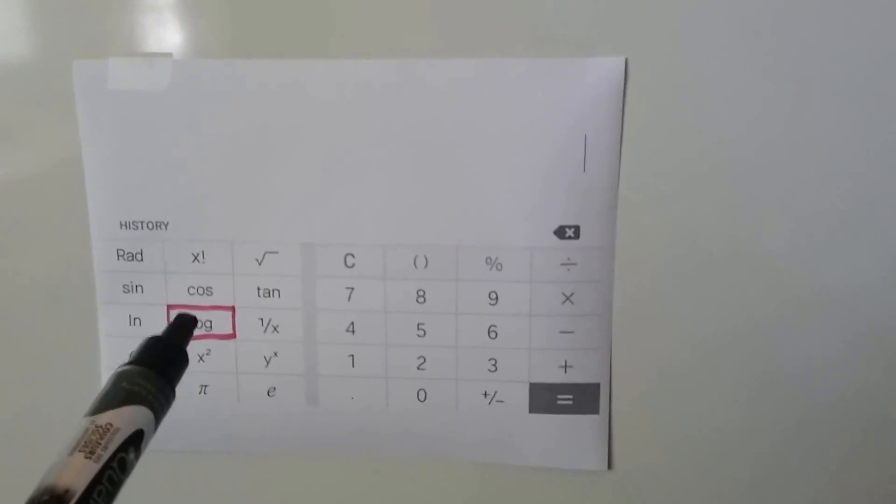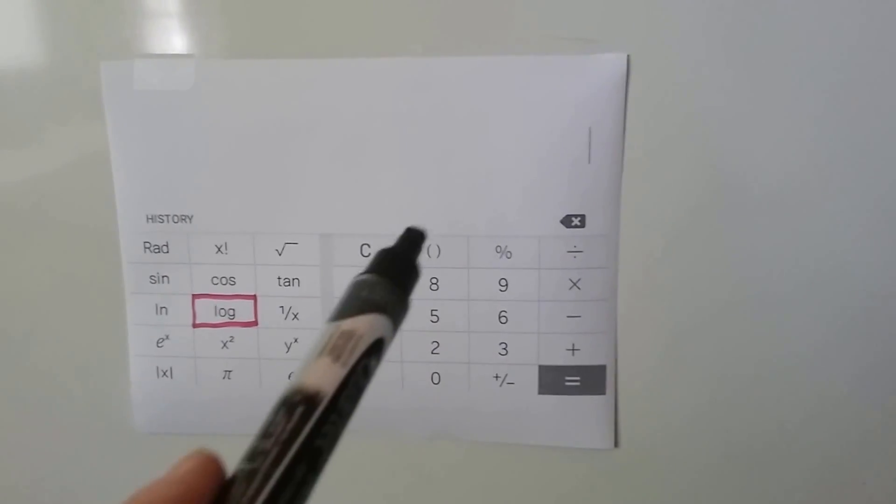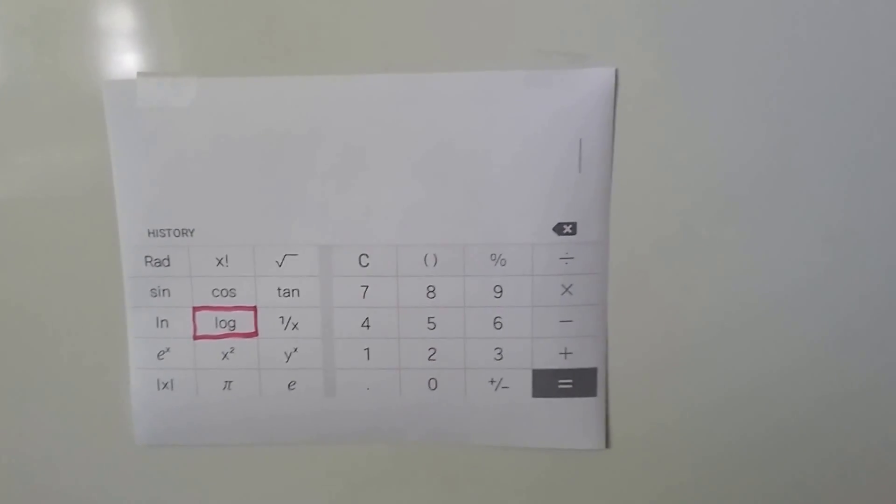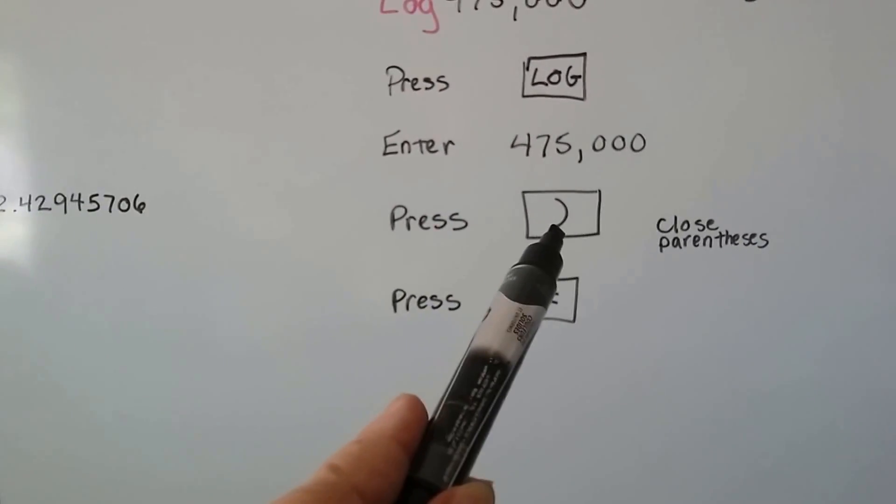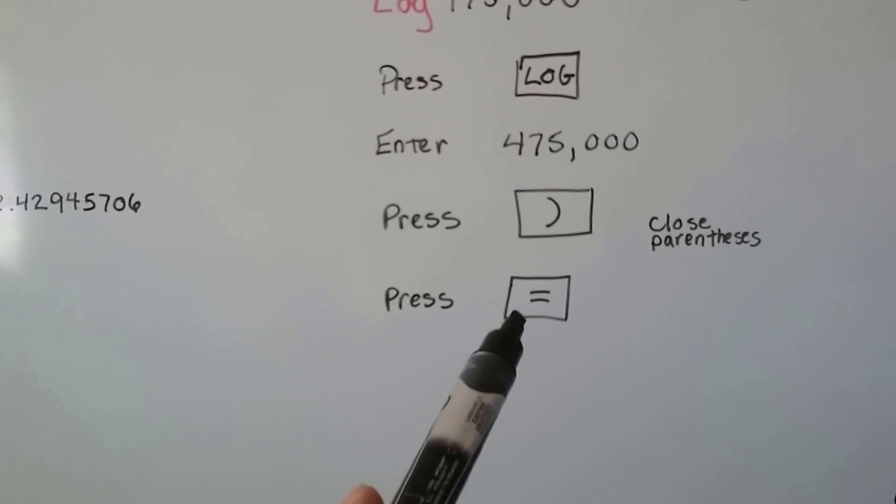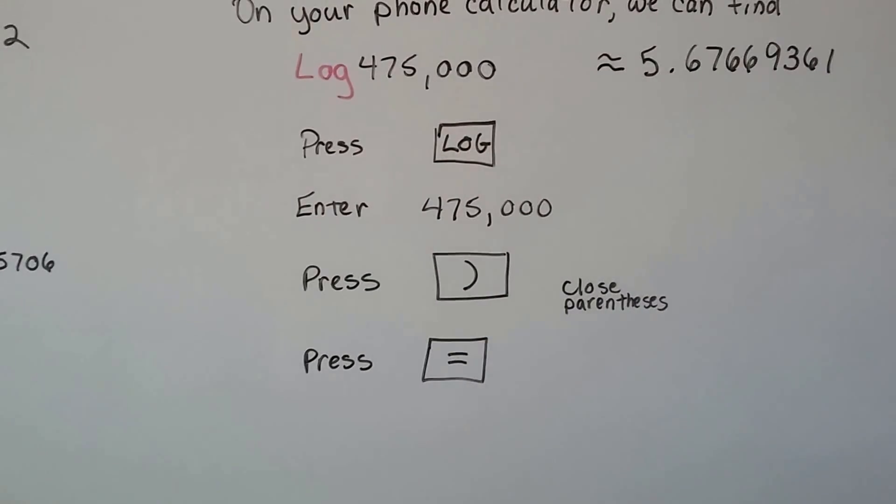When you hit the log button first, it's going to put the opening parentheses for you. So then all you have to do is put in the 475,000 and press the close parentheses key and hit equal, and it's going to give you that approximate amount.